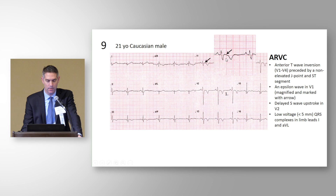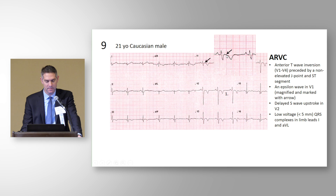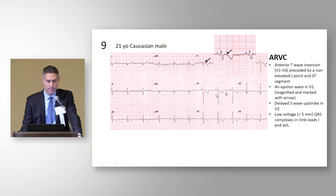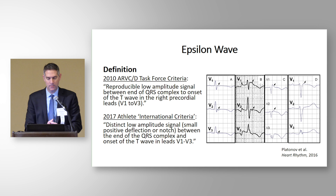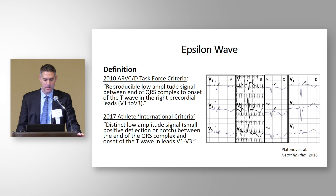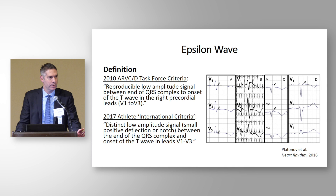Looking at V1 blown up: the epsilon wave is a very small positive deflection or notch just following the QRS complex, between the end of the QRS and the beginning of the T wave. This athlete also has delayed S wave upstroke, calculated from the nadir of the S wave to the end of the QRS complex. The definition of an epsilon wave from the 2010 Task Force criteria and our international criteria: a reproducible or distinct low-amplitude signal, small positive deflection or notch between the end of the QRS complex and the onset of the T wave in leads V1 through V3.